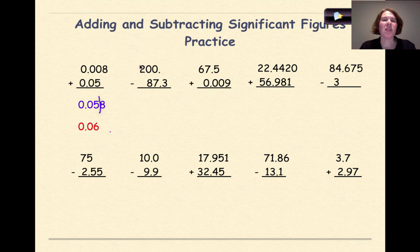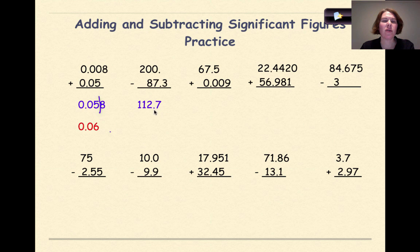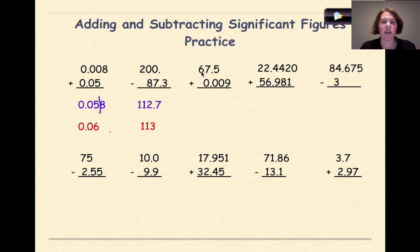Let's look at the next example: 200. minus 0.3. Because of the decimal point, we're going to the ones position. If I subtract this in my calculator, I'm going to get 112.7. I round up the 7, and my final answer will be 113.